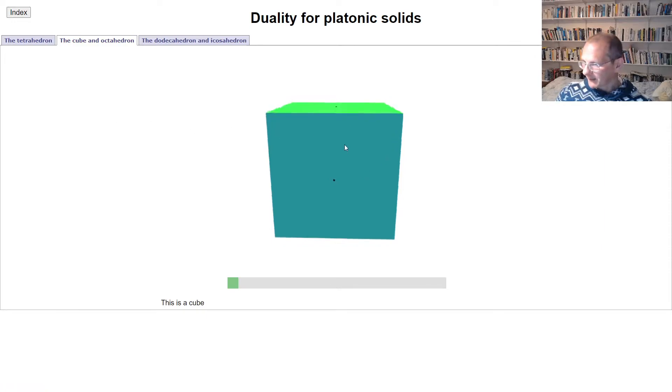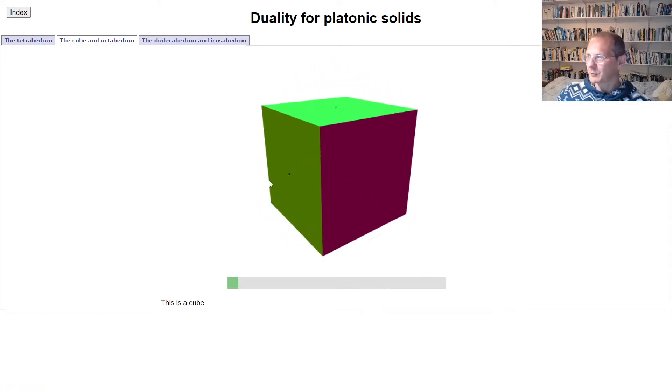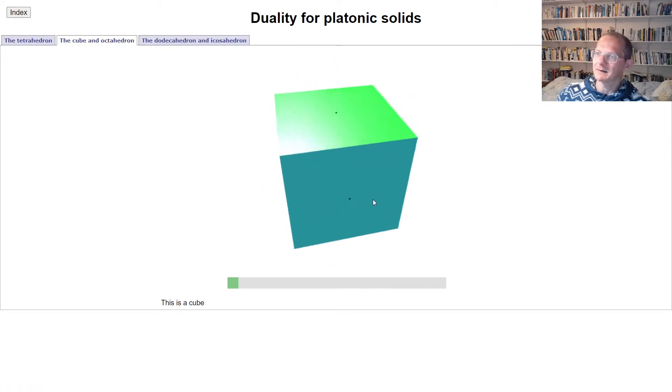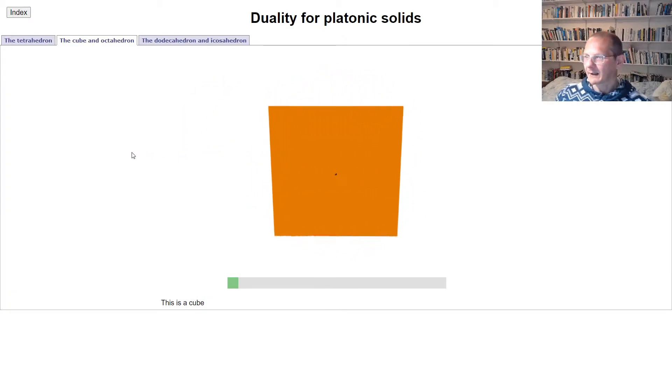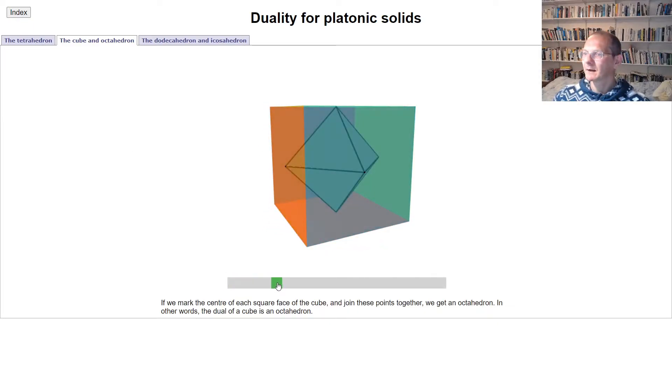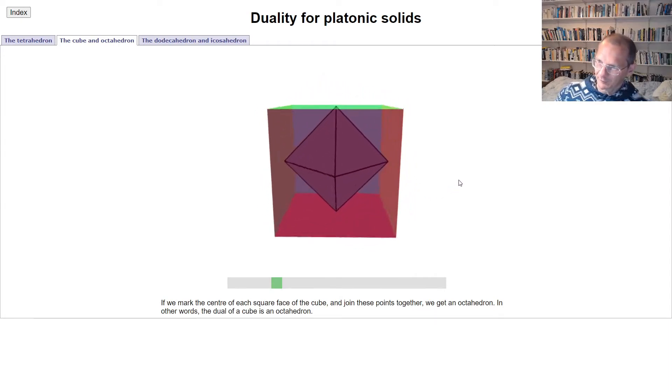We get something a little bit more complicated if we do it with a cube. So here's the cube, and again we've marked the center of each face of the cube and we're going to connect those centers together. And what we find is we get an octahedron like that.